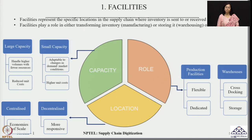Larger capacity helps in making your supply chain efficient. But if you have facilities with smaller capacities, they are quite adaptable to any change in demand or market conditions, though the unit cost associated with small capacity comes very high. However, keeping smaller capacity helps in achieving your target of making the supply chain responsive. In terms of the location of facilities, these locations can be either centralized or decentralized. Centralized locations help in achieving supply chain efficiency through economies of scale. However, decentralized facilities are good for making your supply chains responsive.